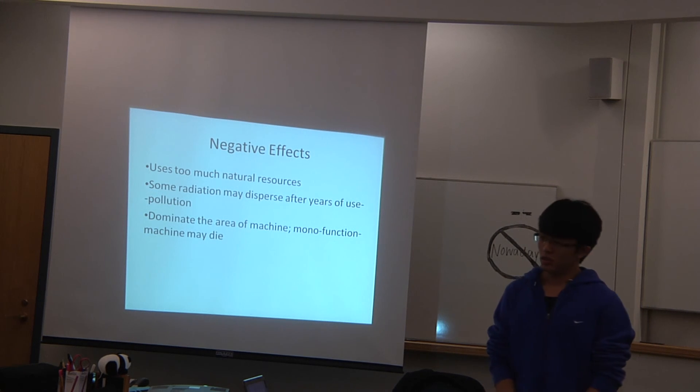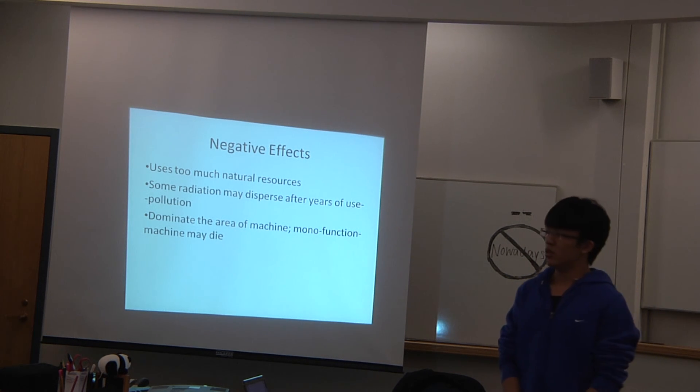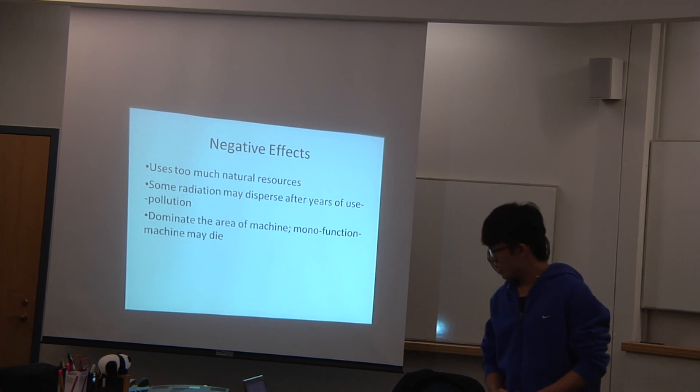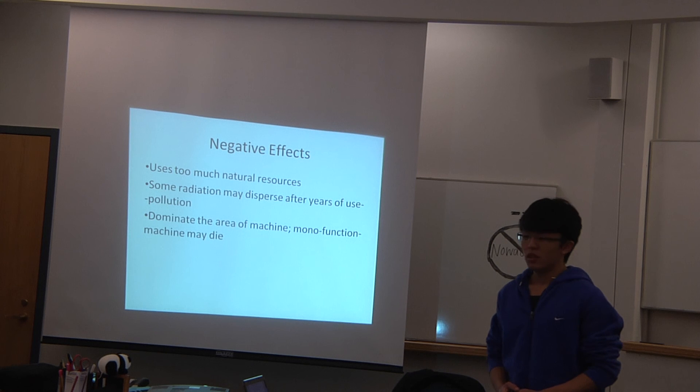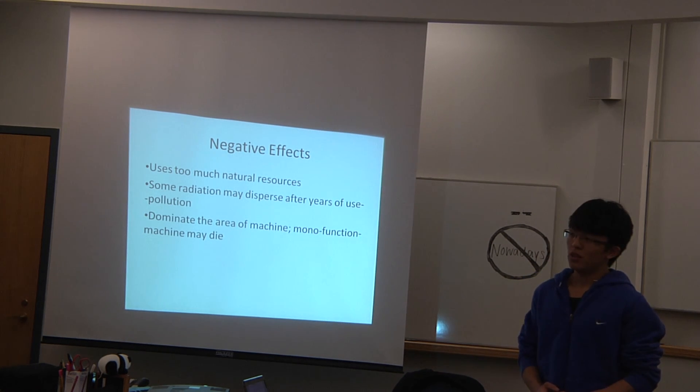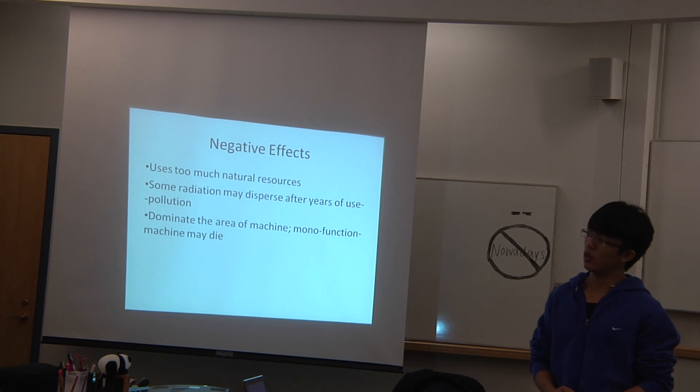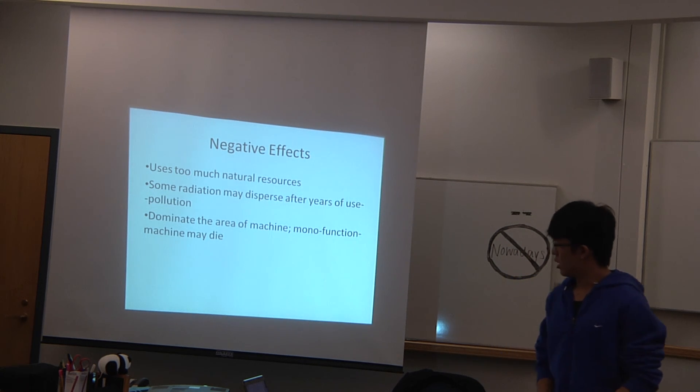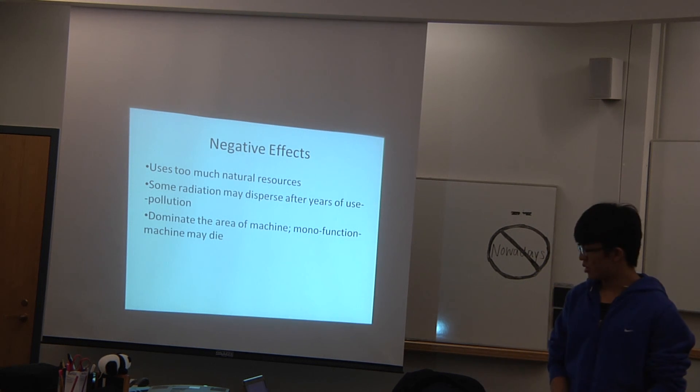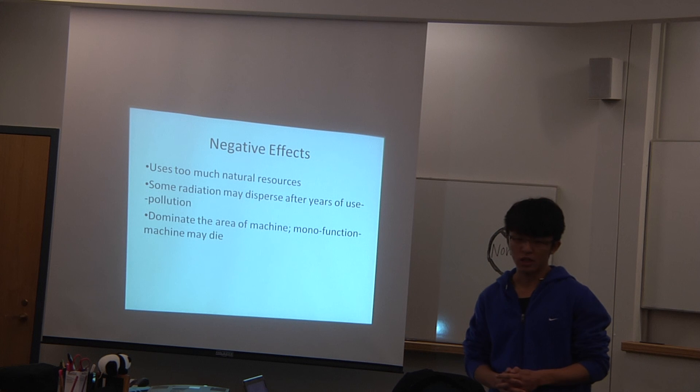The third negative effect is that it dominates the area of the machine that has a similar function to it. For example, our robot has a very good camera. If people want to buy a camera and use the function of the camera, they don't want to only buy the camera because some very good cameras also cost a lot of money. But our robot only costs at most $2,000. So it may be a problem because some more specialized function machines will die.